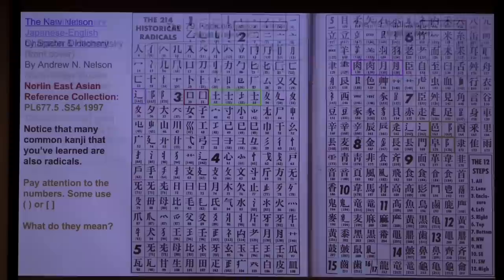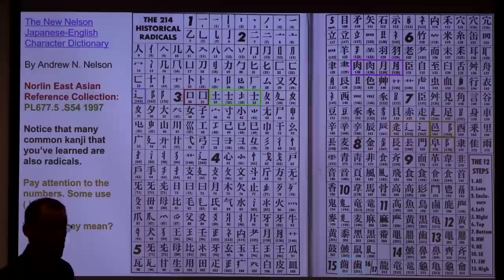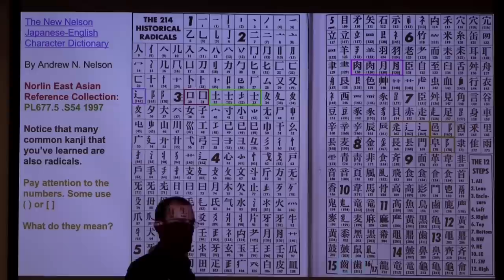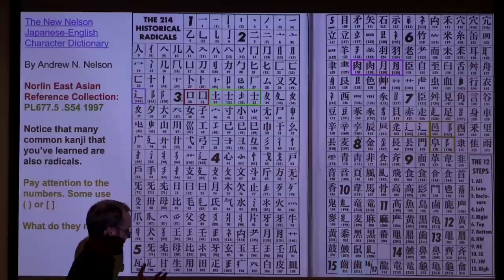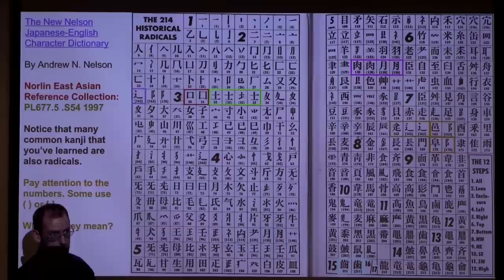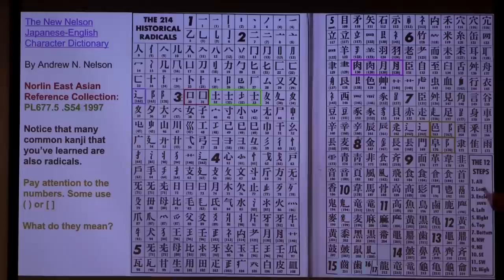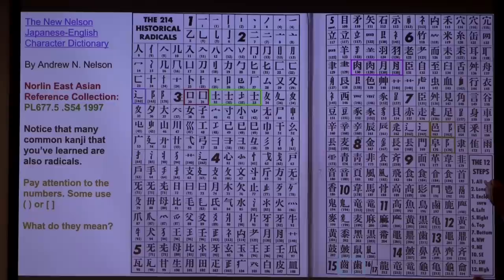This beast of a chart is the most commonly used one — the Nelson radical index. When you see a character, you make an assumption about its radical. If you see the rain character on top, you'd assume rain is the radical because you assume the top of the character is the radical before you assume the bottom — there is a hierarchy that goes with that. And everyone always forgets the step where the kanji itself is the radical.